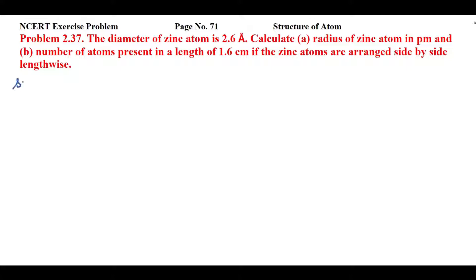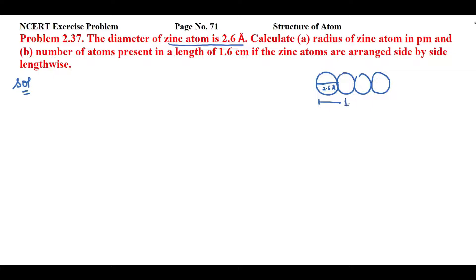In this question, you have the diameter of zinc atom that is 2.6 angstrom. The diameter is 2.6 angstrom and you have to find the radius of this zinc atom in picometer. Next, you have to find the number of atoms present in a length of 1.6 centimeter, where zinc atoms are arranged side by side. So first of all, we will solve the first problem.